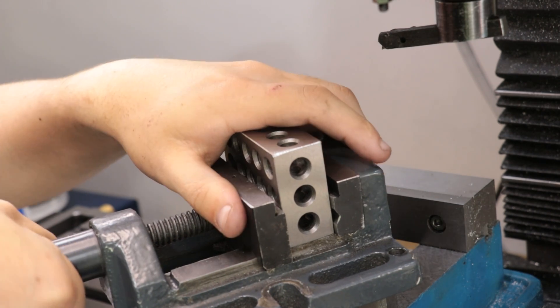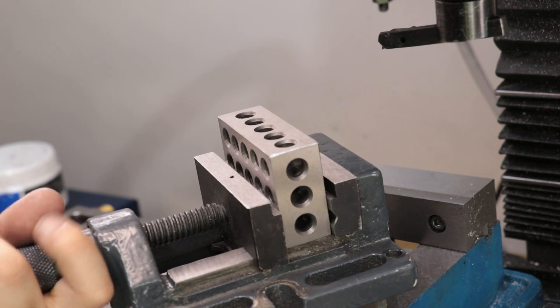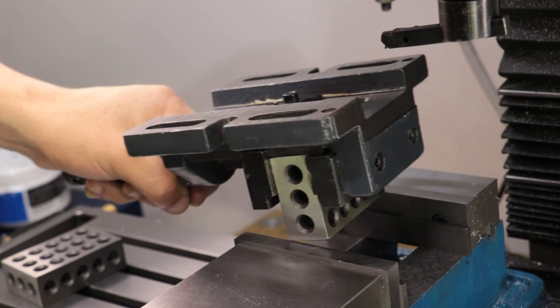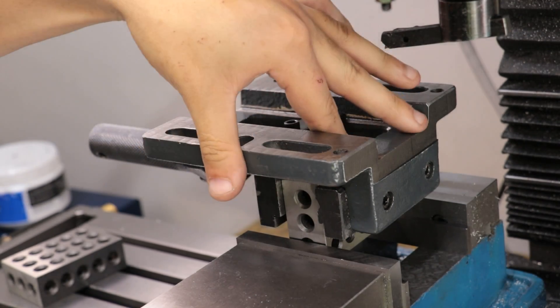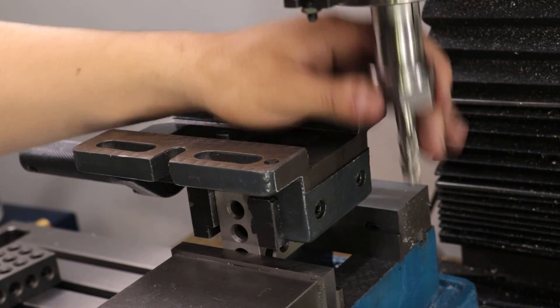I put a 1-2-3 block in the jaws, and then I clamped that 1-2-3 block in the big vise. I'm sure that there are better ways of doing this, but for a simple tilt vise like this, it should be good enough.